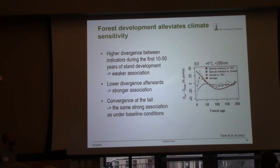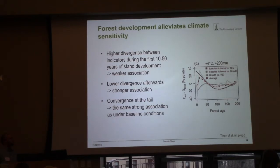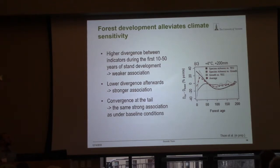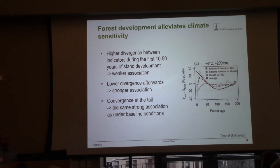If we take this over stand development and do the same prediction with plus 4 degrees and 200 millimeters, and compare how the associations differ, this plot tells you that if this is getting positive, there is a higher divergence under changed climatic conditions. The association between all these indicators is lower within the first 50 years. But then it's getting even stronger and ends in the same strong association we have seen also under baseline climate conditions.